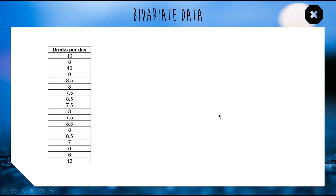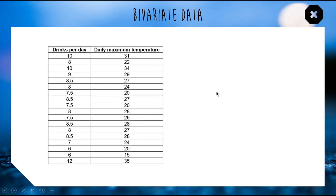What we look at in this topic is comparing this to some other variable to make bivariate data. So I looked up the weather reports, and on the day when I had 10 drinks of water the max temperature in my local area was 31 degrees.